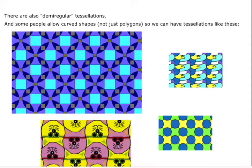There's also other tessellations called demi-regular. And some people allow curved shapes, not just polygons. So you can have a bunch of different tessellations like these.